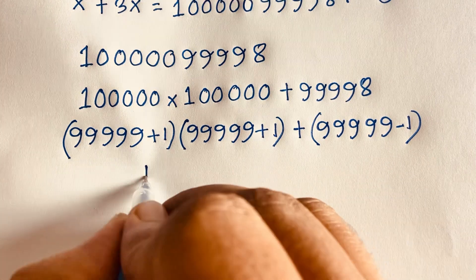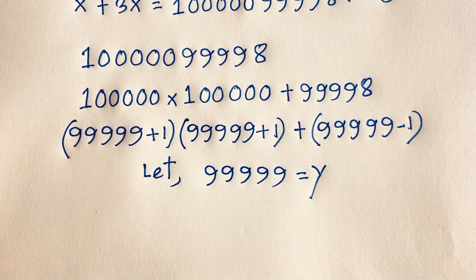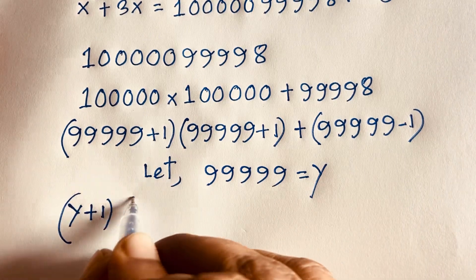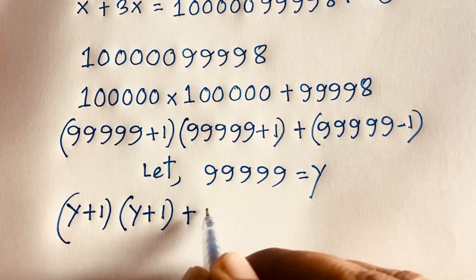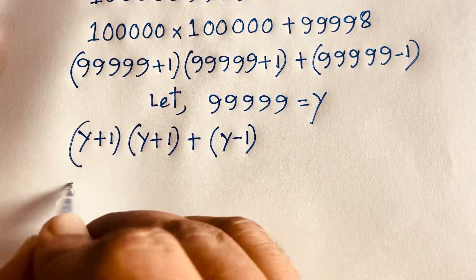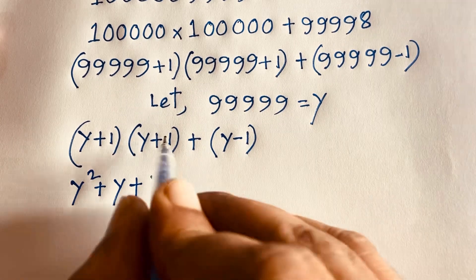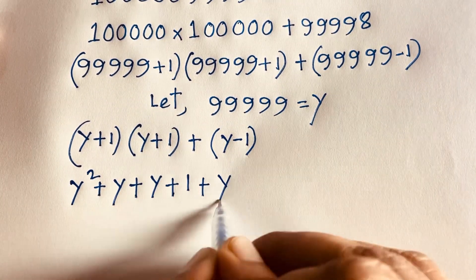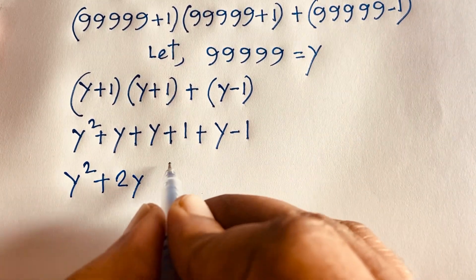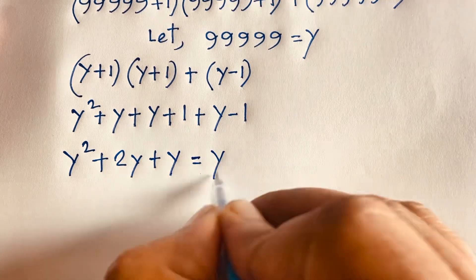Now at this moment, let this number — I mean 99,999 — equal y. This time I can see this equation will be y plus 1, because we let this equal to y. And it is also y plus 1, plus y minus 1. Expanding: y times y gives y squared, plus y times 1 gives y, plus 1 times y gives y, plus 1 times 1 gives 1, plus y minus 1. Simplifying, we get y squared plus 2y, and the 1 and minus 1 cancel, giving us the wonderful value y squared plus 3y.